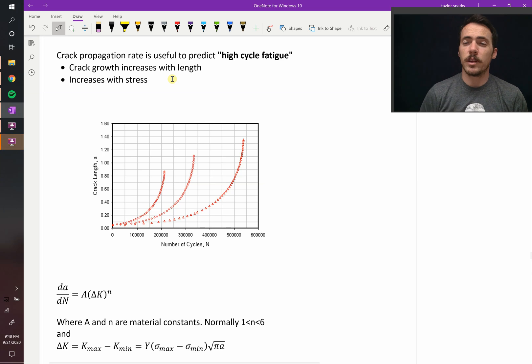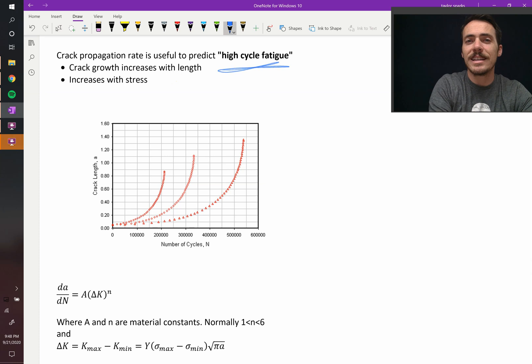We now need to calculate something called the crack propagation rate in order to predict high cycle fatigue. When these things are going to cycle for 1,000, 10,000, 1,000,000, 10,000,000, many, many cycles, we'd like to be able to predict how long they're going to last. In order to do that, we need to know how fast this crack is growing.